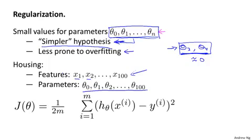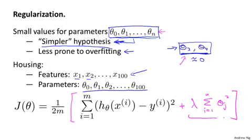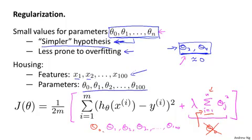In regularization, what we're going to do is take our cost function. Here's my cost function for linear regression. What I'm going to do is modify this cost function to shrink all of my parameters, because I don't know which one or two to try to shrink. I'm going to modify my cost function to add an extra regularization term at the end to shrink every single parameter. This term would tend to shrink all of my parameters theta 1, theta 2, theta 3, up to theta 100. By convention, the summation here starts from 1, so I'm not actually going to penalize theta 0 being large. Usually we regularize only theta 1 through theta 100.